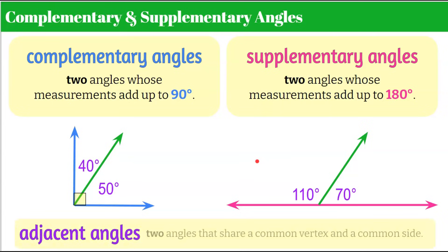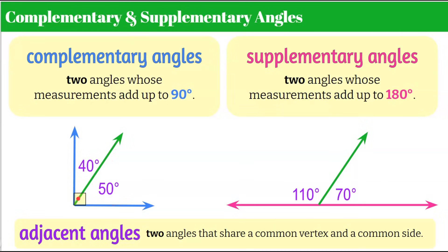Adjacent angles are two angles that share a common vertex and a common side. The complementary angles share a vertex and the green ray as a common side — the 40-degree and 50-degree angles are adjacent. Similarly, the 110-degree and 70-degree angles share a vertex and side, making them adjacent. A helpful memory tip: C comes before S, and 90 is smaller than 180 — complementary equals 90, supplementary equals 180.